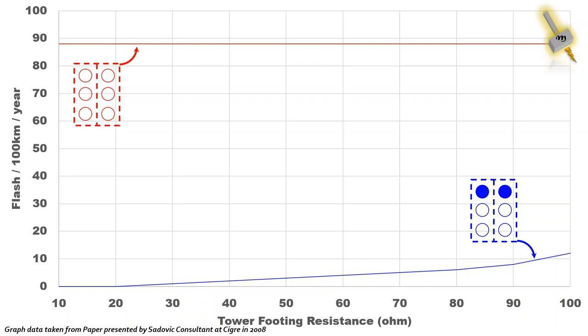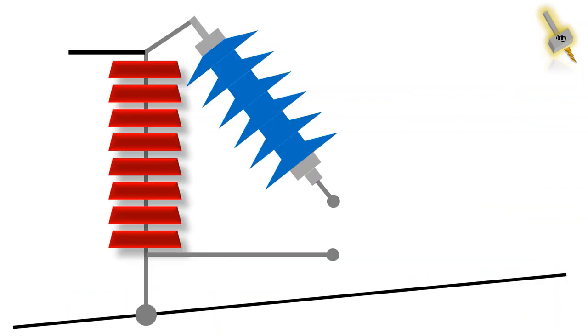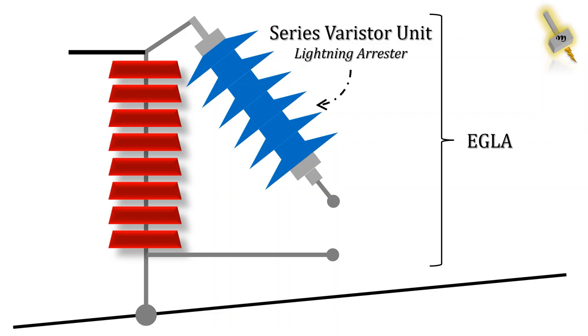So now, since it is clear that the presence of a line surge arrestor improves the line performance, let's move to the main topic. As discussed in earlier video, EGLA has two sections: the first one is series varistor unit or SVU and the second one is series spark gap.